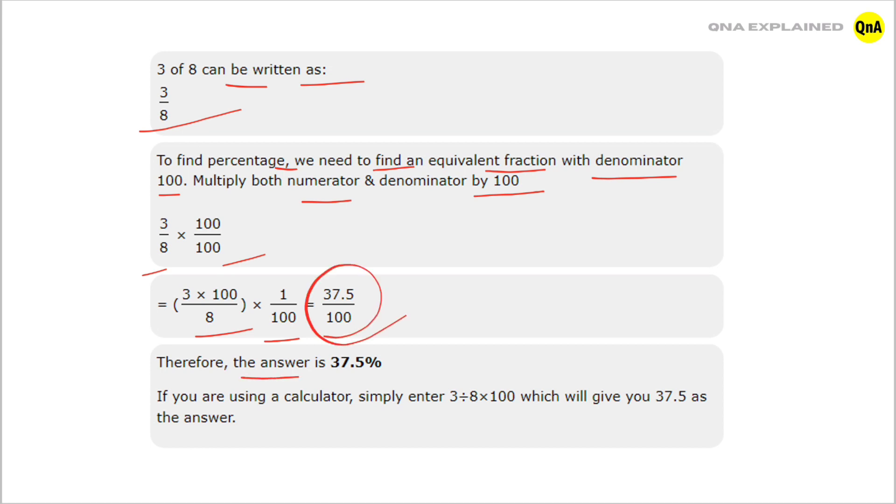Therefore, the answer is 37.5%. If you are using a calculator, simply enter 3 divided by 8 into 100, which will give you 37.5 as the answer.